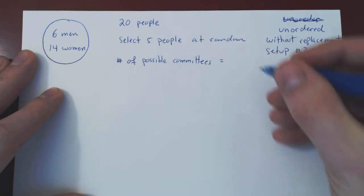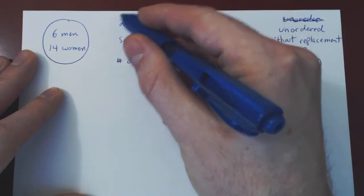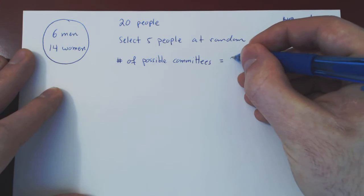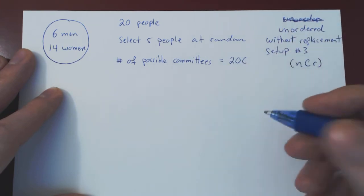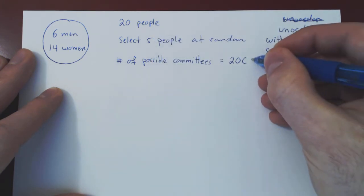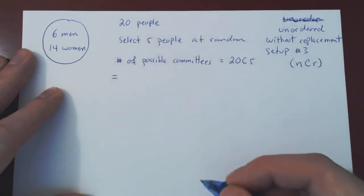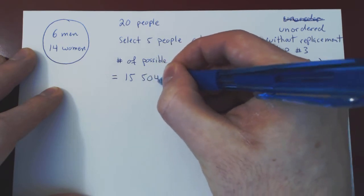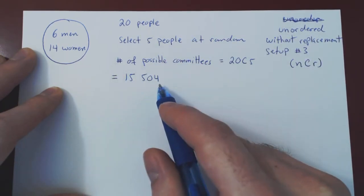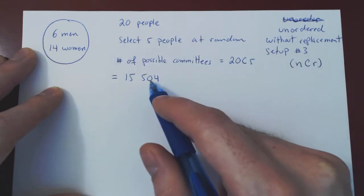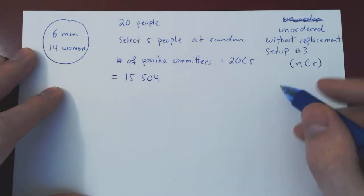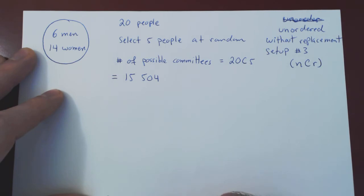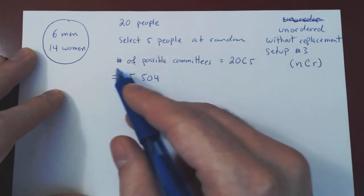The number of possible committees will be n choose r. Here n is the total number of people we can choose from — there are 20 people in total, so it's 20. And we are choosing 5. If you compute 20 choose 5 with your calculator, you will find there are a total of 15,504 possible committees. So there are a lot of different possibilities, and clearly we'll have to use some clever counting techniques. We can't just brute-force count the probabilities, as there are way too many possible committees.